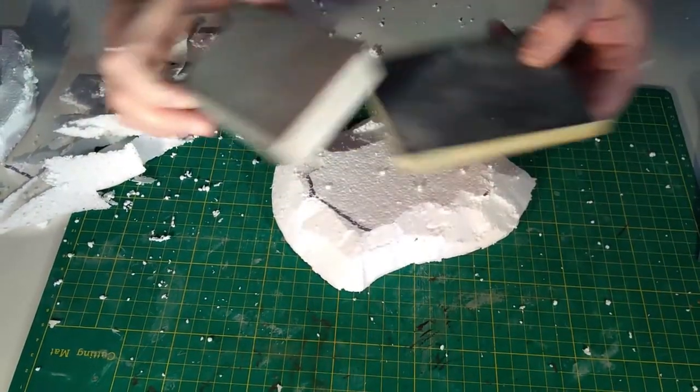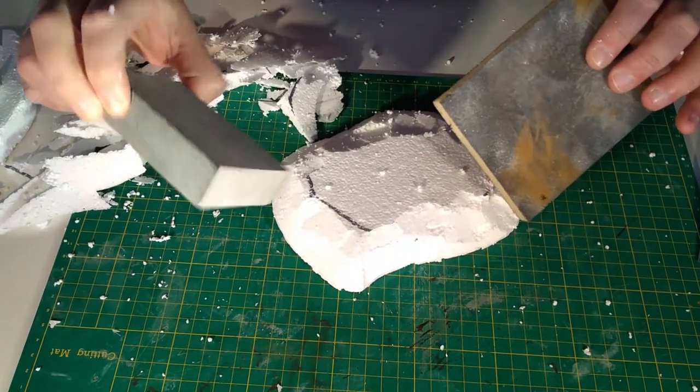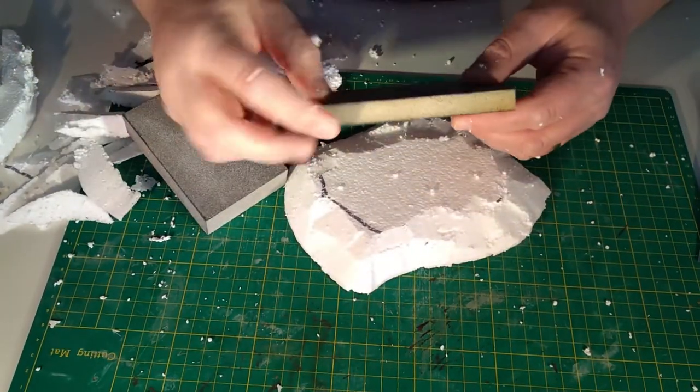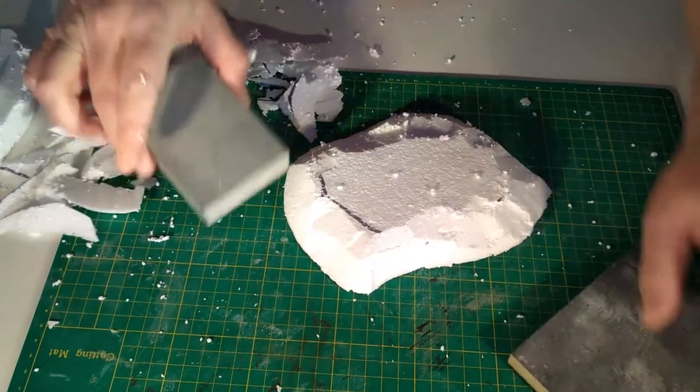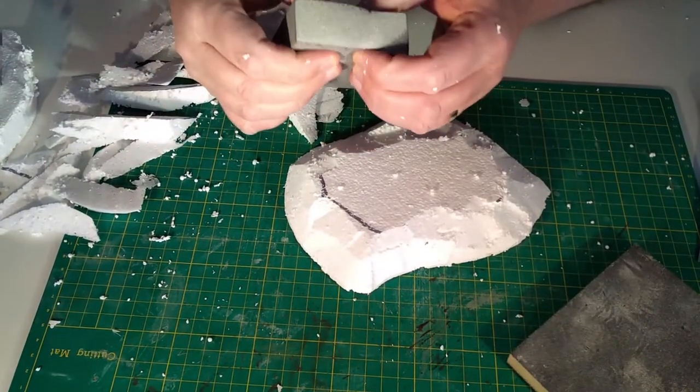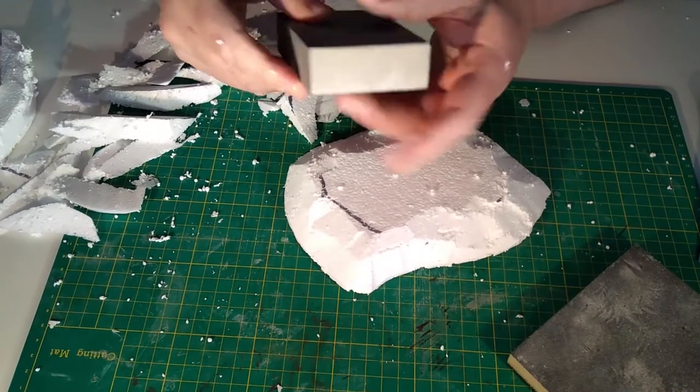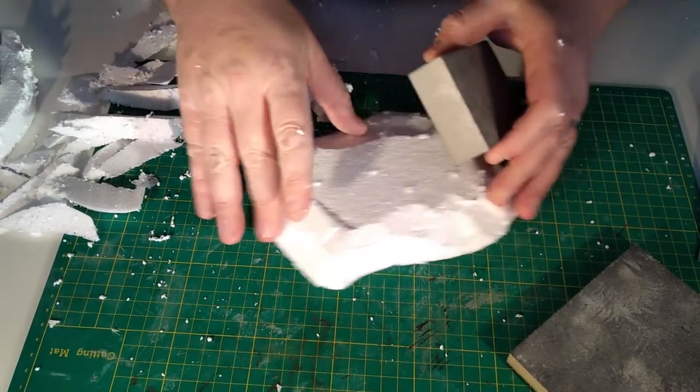For the next stage I'm going to sand the hill. I have two types of sanding block, both available from my local discount store. One of them has open sides with a soft sponge core and the other one is more rigid. Either are suitable for the task. For this stage I'm going to use the rigid one.